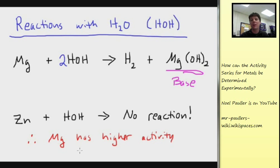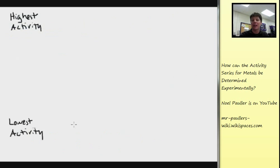The magnesium then has a higher activity than the zinc. Copper, to conclude, has the lowest activity because it had no reaction with the acid, no reaction with water.